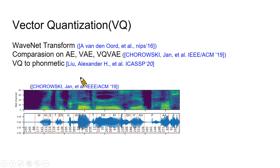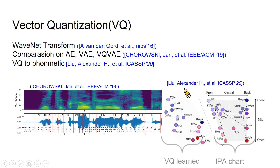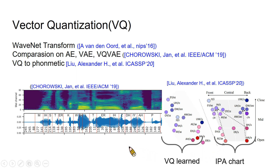Here we reference some related papers on vector quantization and formant representation. One paper describes that a set of quantized indices can match formant representation. It also shows that a vector quantization variational autoencoder disentangles speaker information the most. Another paper shows that the embedding learned by vector quantization resembles the International Phonetic Alphabet chart, similar to the Human Formant Chart. So according to this, we may be able to learn formant representation through vector quantization.